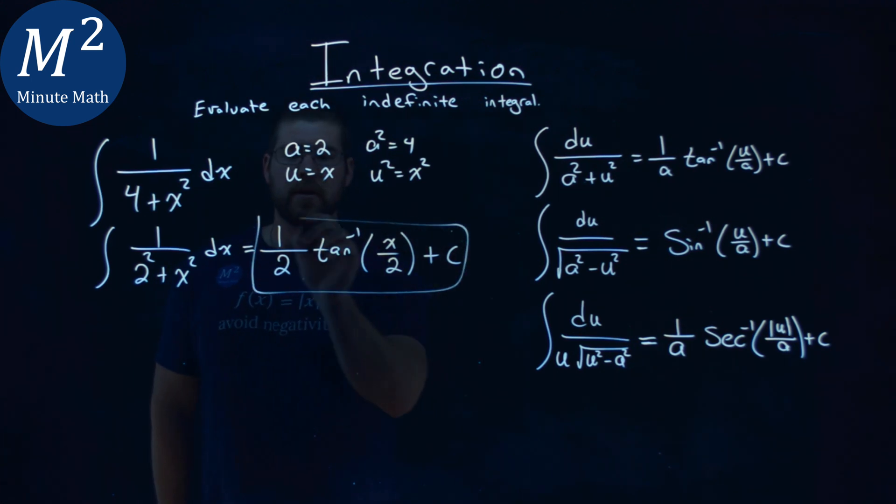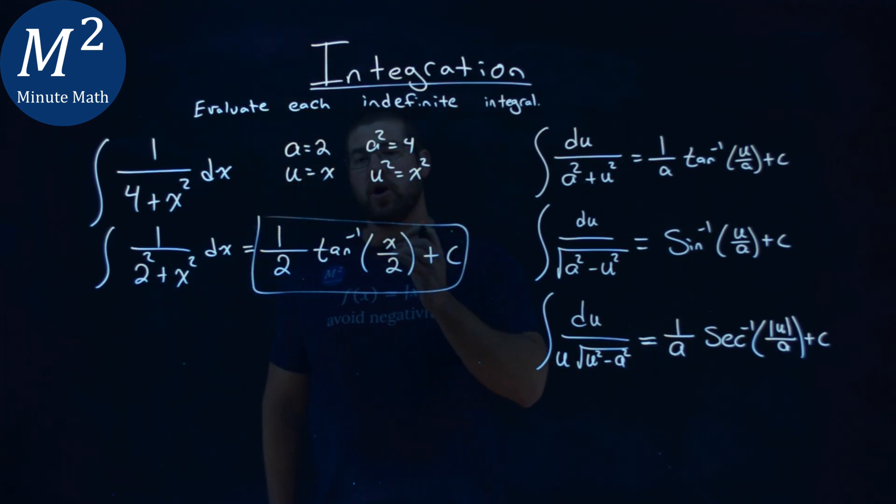And so the integral here, just using our definition, is 1 half arctan of x over 2 plus c.